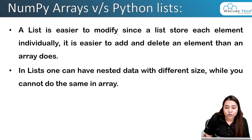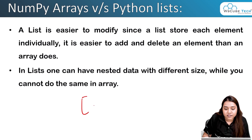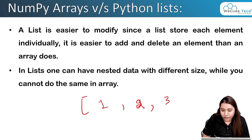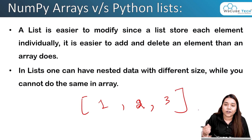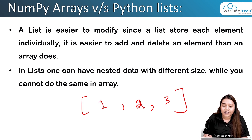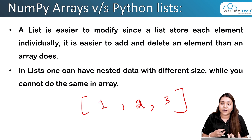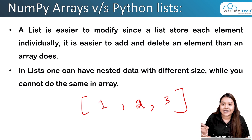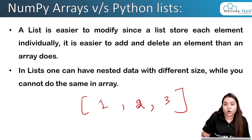A list is easier to modify. Since a list stores each element individually, it is easier to add and delete elements. In a list, if we want to add an element we just write the list name followed by dot append and the value. In an array it is more difficult because arrays have multiple rows and columns, so we need to be very specific about where to add or delete an element.